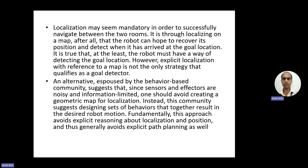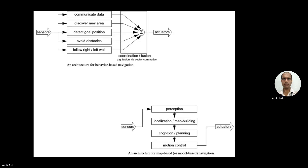Fundamentally, the behavior-based approach avoids explicit reasoning about localization and position, and thus generally avoids explicit path planning as well. This makes it simpler compared to the map-based method, where the robot has to develop a map and then follow it from the initial to the goal position. In the behavior-based approach, we can plan the path, put some marks, and the robot can identify those marks and take the required action.